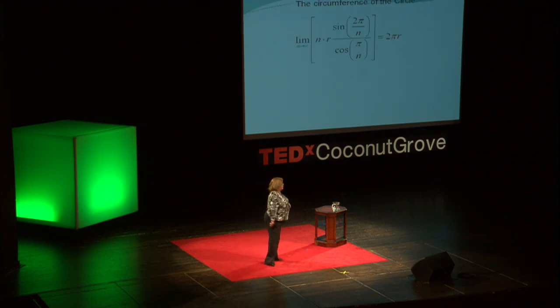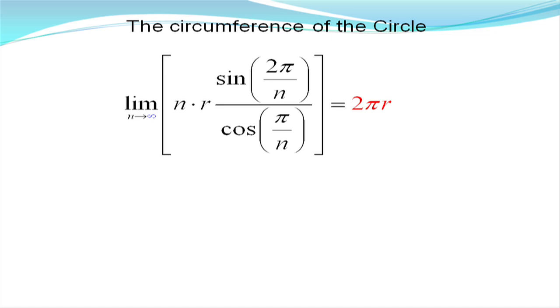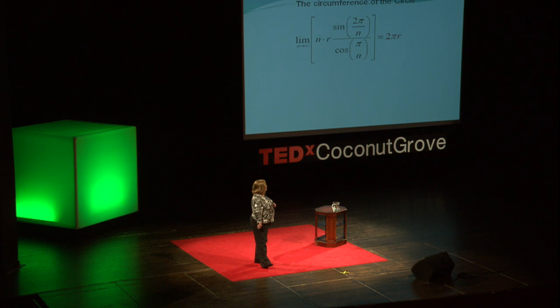So in a calculus class, what it would look like is this limit problem. We'd let the number of sides go to infinity and actually prove that the circumference of the circle is exactly 2πr. Pretty good.